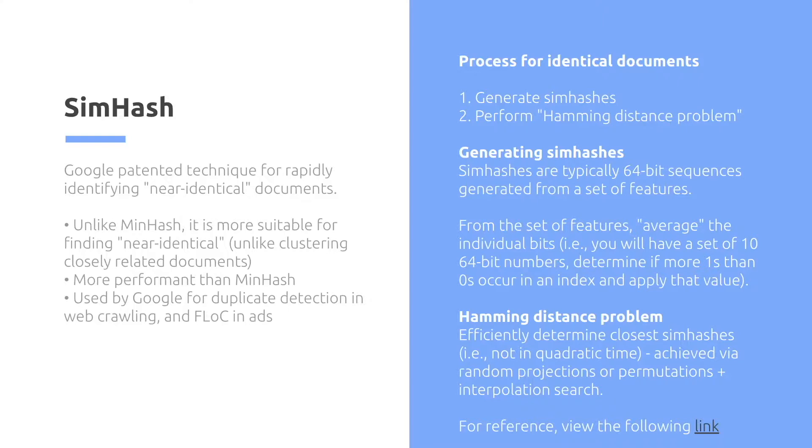While SimHash is more strict in terms of these are the constraints for which I will accept or detect that two documents are identical. It's more performant than minhash, and it's used by Google for duplicate detection in web crawling and also federated learning of cohorts and ads.